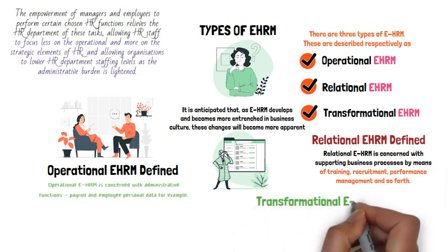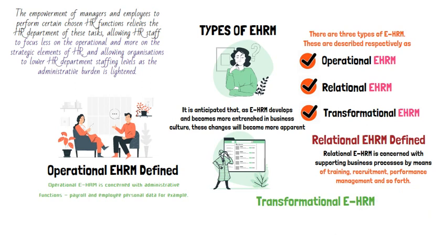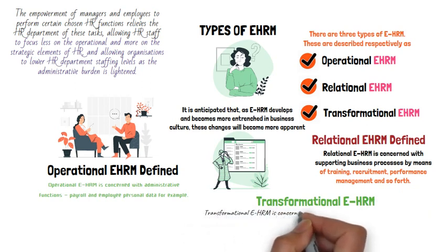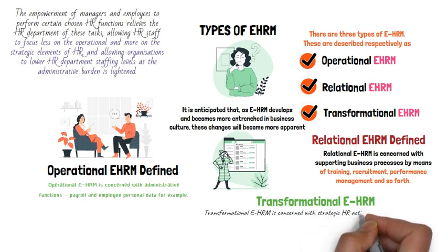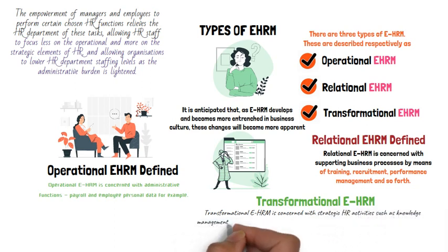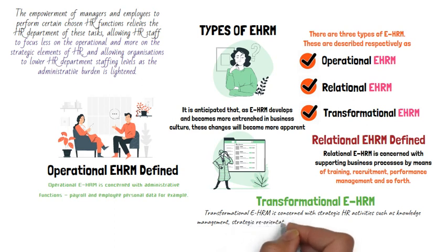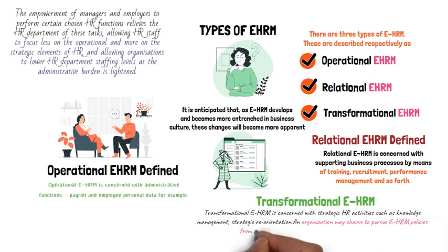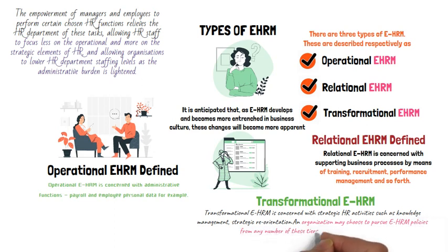Transformational EHRM is concerned with strategic HR activities such as knowledge management and strategic reorientation. An organization may choose to pursue EHRM policies from any number of these tiers to achieve their HR goals.